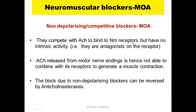These blockers bind to NM receptors in preference to acetylcholine. Since they have no intrinsic activity, they just block the receptor, and as a result, acetylcholine released from motor nerve endings cannot bind, so muscle contraction does not occur. This is how non-depolarizing neuromuscular blockers block muscle contraction. To reverse their action, you can give anticholinesterases.